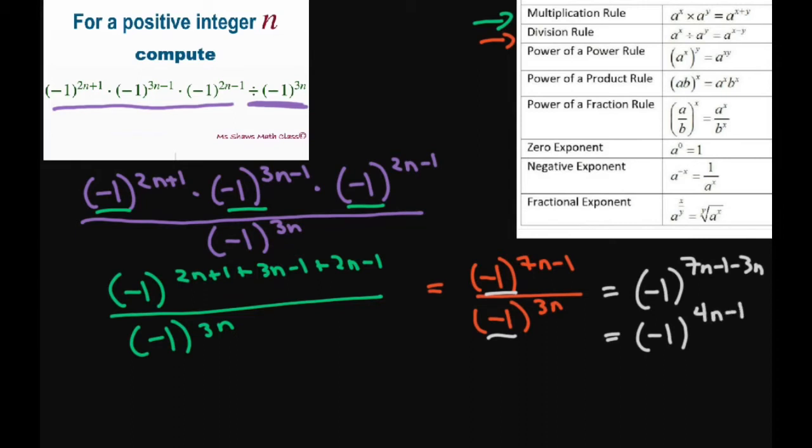You can write this as, using your division rule again, this can be (-1)^(4n) divided by (-1). So these are equivalent.